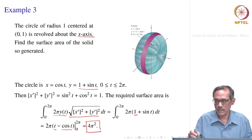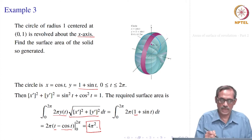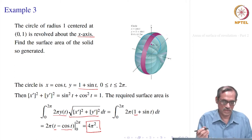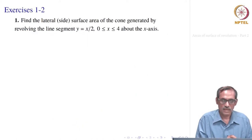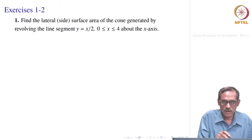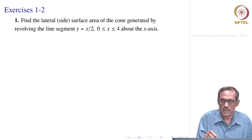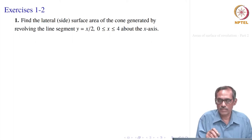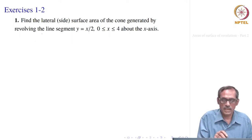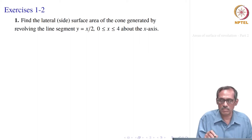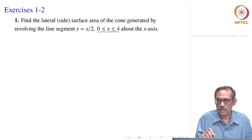So this is how we find the area of the surface of revolution. Now, based on these three types of possibilities, let us see how we are able to use these things. Let us take the first exercise.